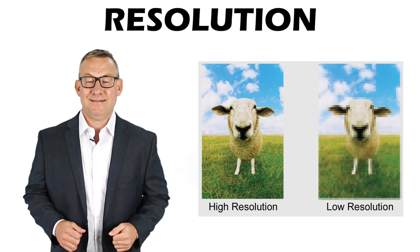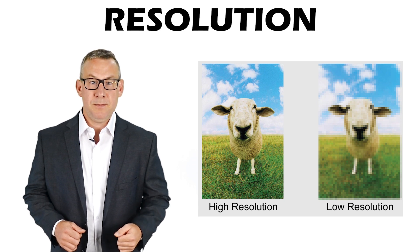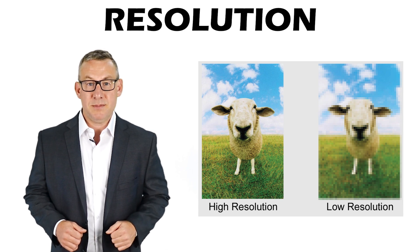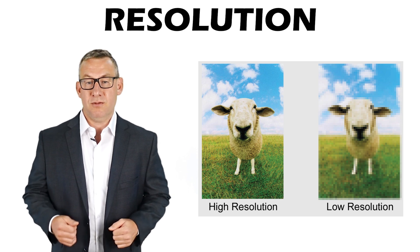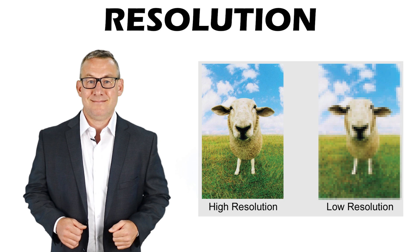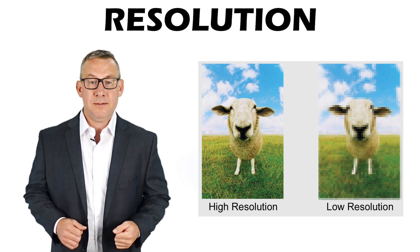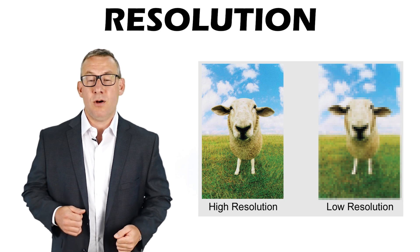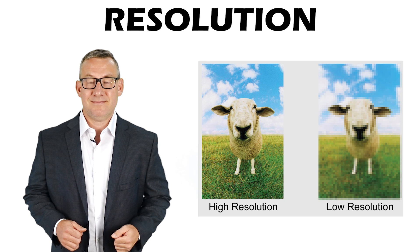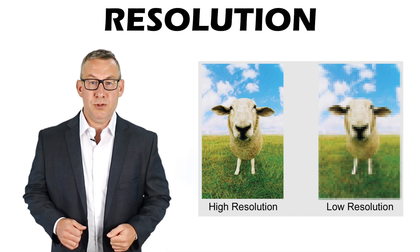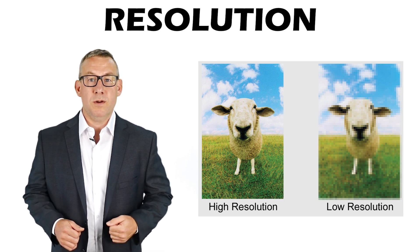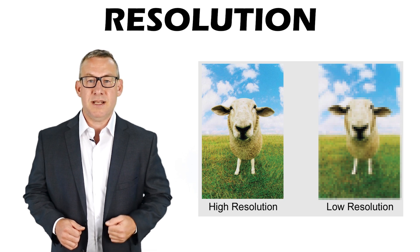Image resolution is the most commonly known type of resolution. Images are raster data types, so image resolution works just like raster resolution. A higher image resolution has a small cell size, higher DPI, records more detail. Lower image resolution has a large cell size, lower DPI, and records less detail.